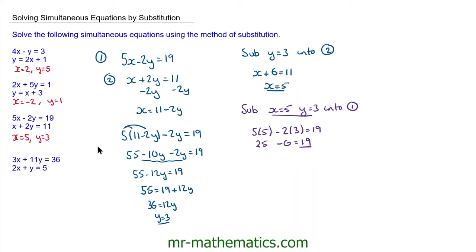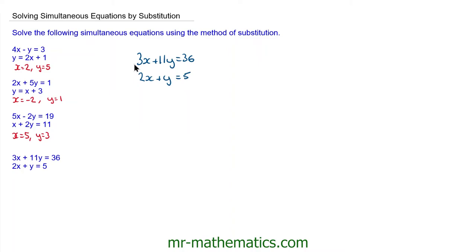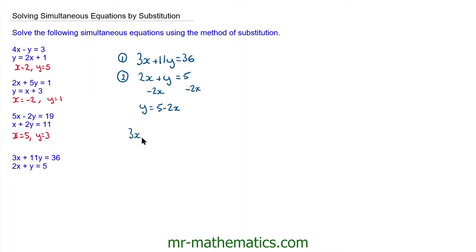Okay, so for our next question. I'll begin by calling the top one equation 1 and the bottom one equation 2. Now we need to make y the subject of this equation, so we'll take away 2x from both sides. We're left with y is equal to 5 minus 2x. And now we can substitute this expression for y into the y in equation 1.